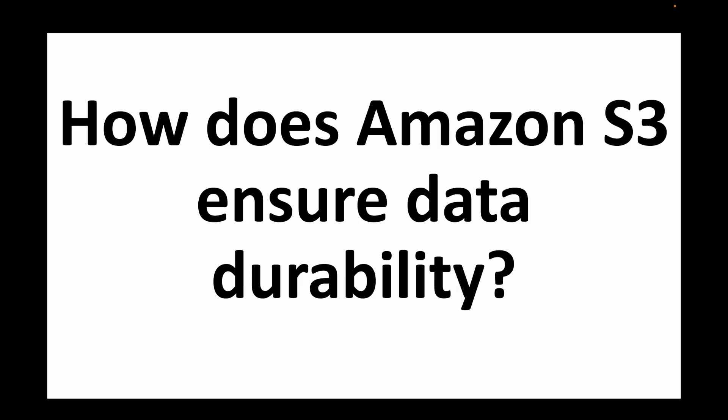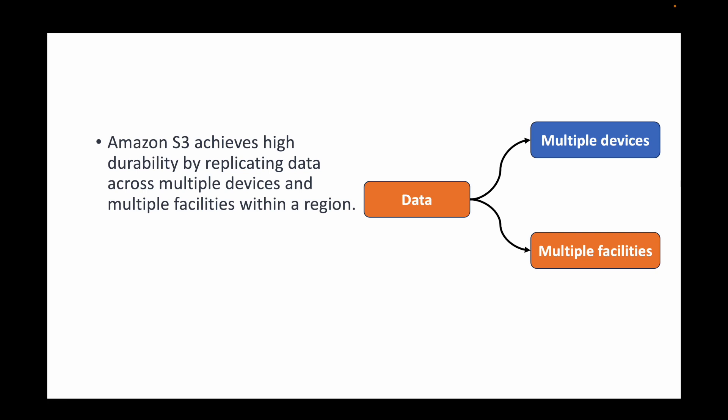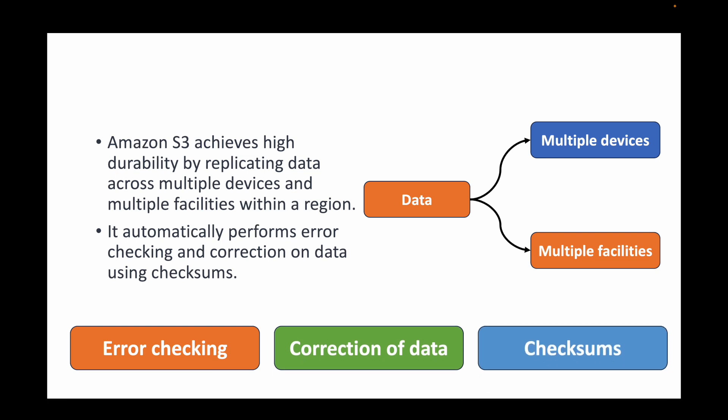The next question is: how does Amazon S3 ensure the durability of your data? Amazon S3 provides 99.999999999% — that's 11 nines — of durability. It achieves this by replicating your data across multiple devices and multiple facilities within a region, across availability zones. Even if one availability zone has an issue, the data remains available in another. S3 also performs automatic error checking and correction, maintaining checksums for all uploaded data.